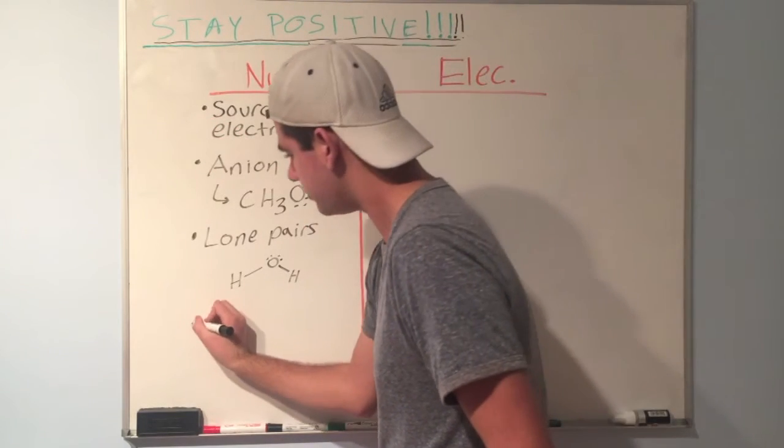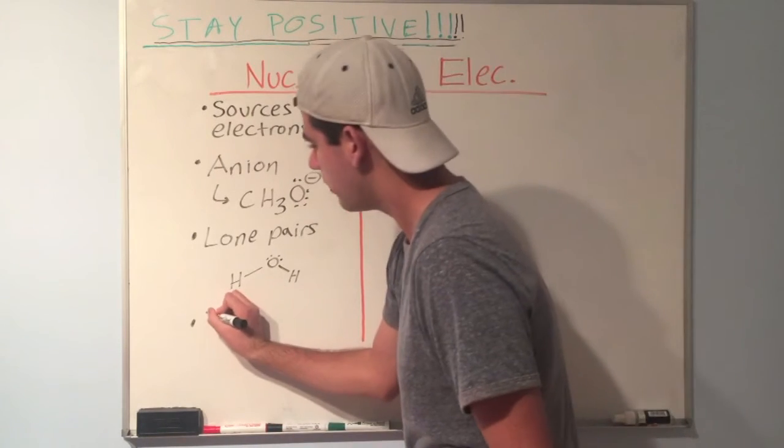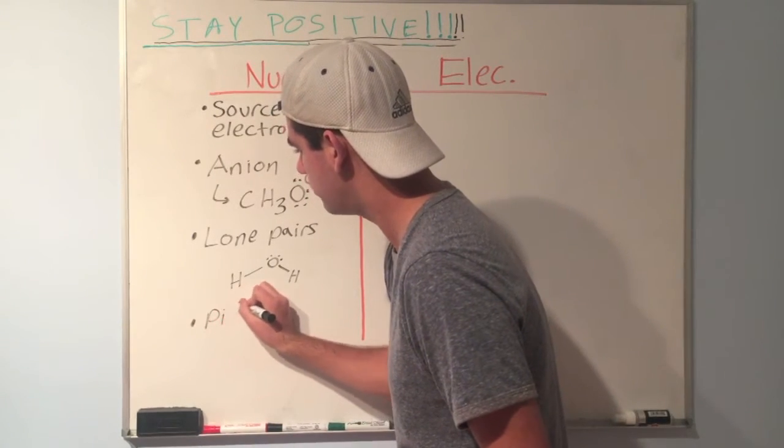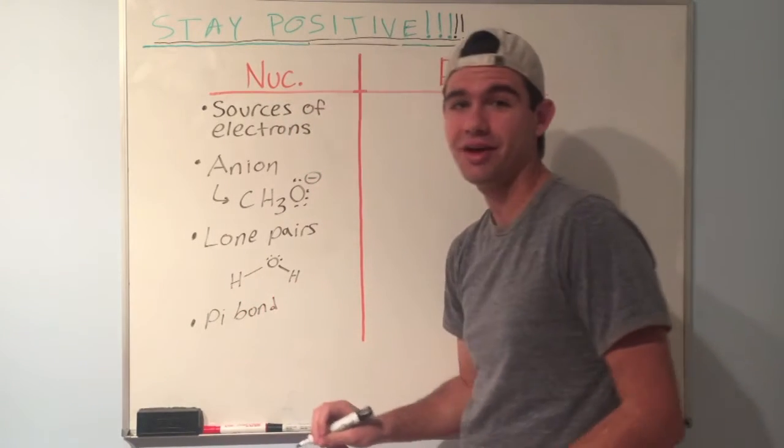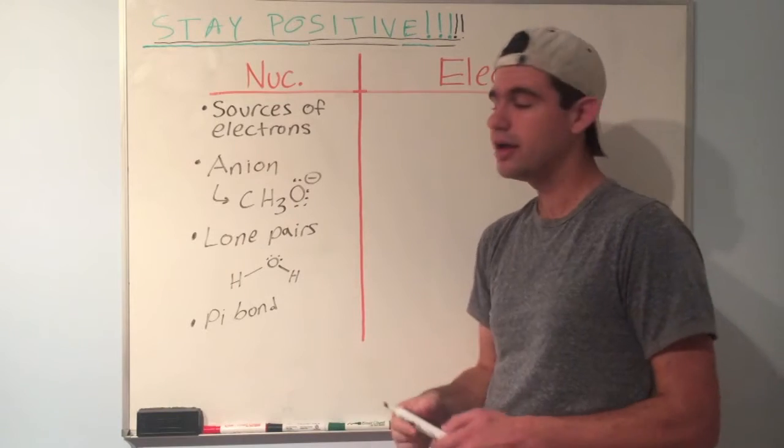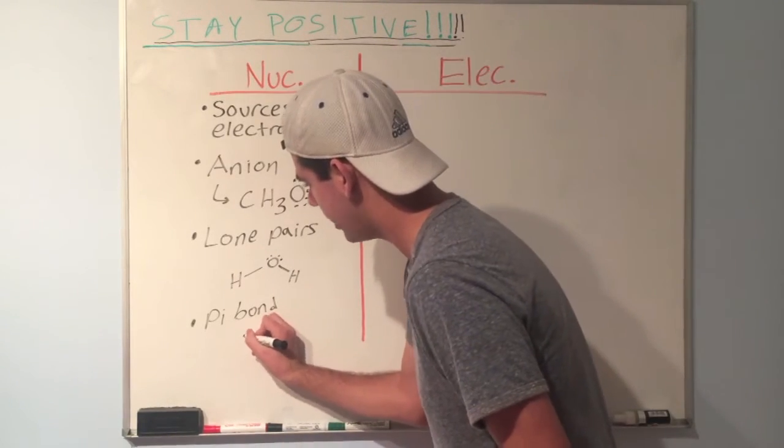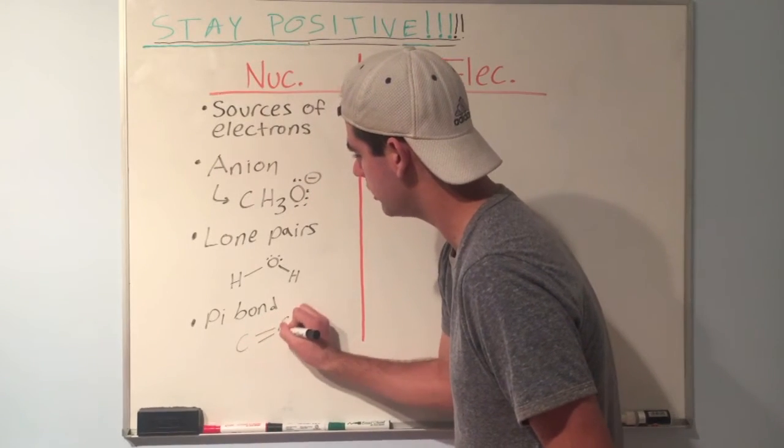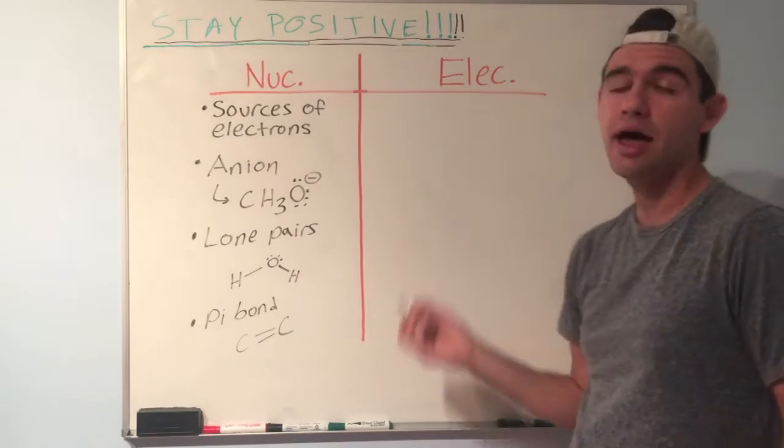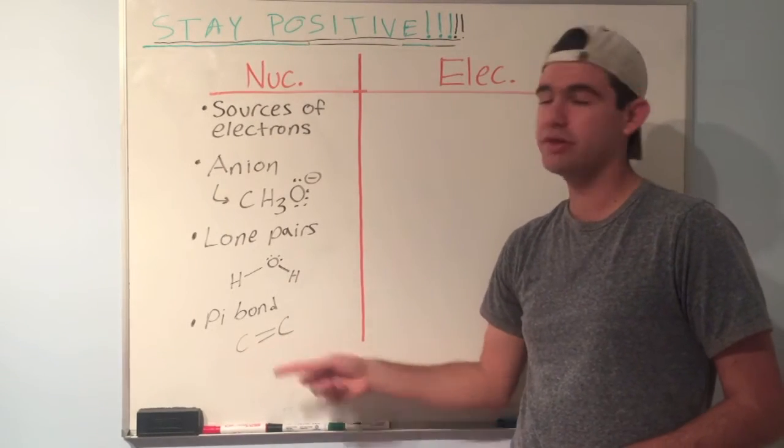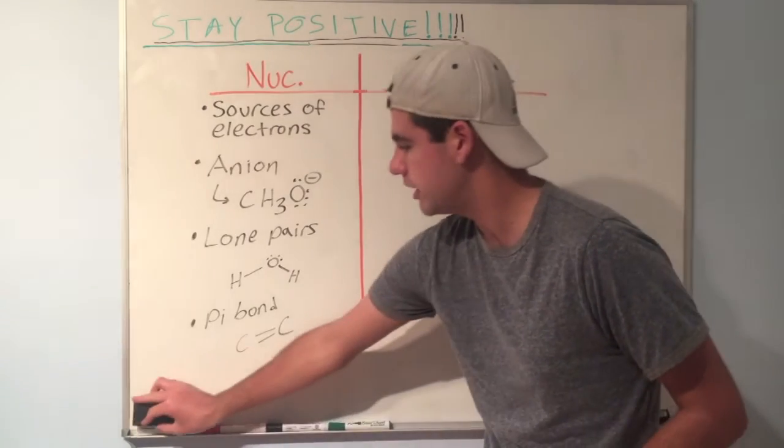And finally, a third thing that can be nucleophilic is a pi bond. What is a pi bond? A pi bond is one of two bonds in a double bond or one of three bonds in a triple bond. You have a sigma bond and you have a pi bond. The pi bond can serve as a source of electrons because if you look at it, let's say a carbon double bond into a carbon. This pi bond can serve as a source of electrons and attack an electrophile. We're going to get into these when we talk about reactions with alkenes. But for now, just know that a pi bond can be nucleophilic.